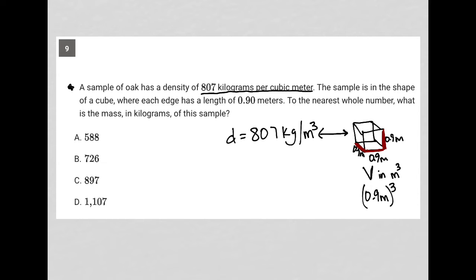That's how we find the volume of a cube. So I'm going to go to my calculator and see what is 0.9 to the third power. That is 0.729. So my volume of the cube is equal to 0.729 cubic meters or meters cubed.